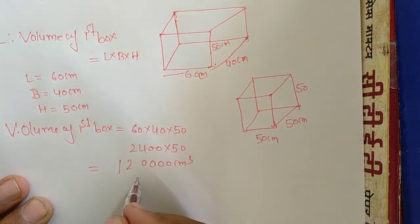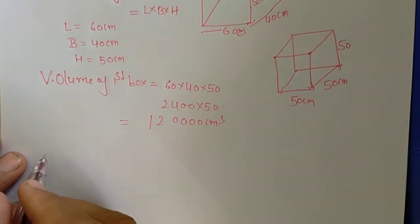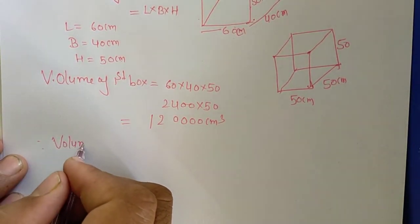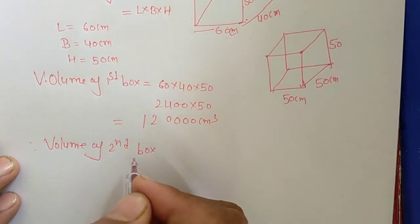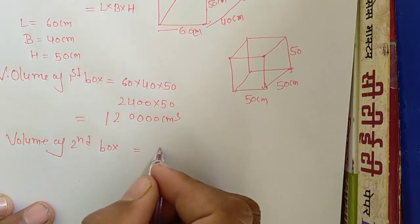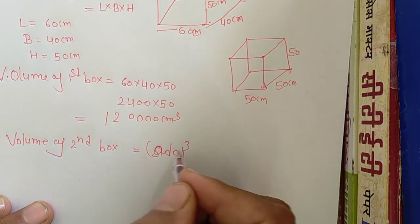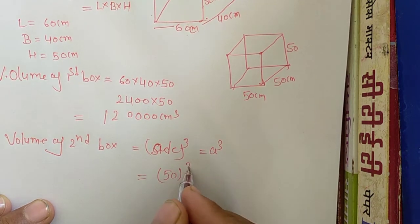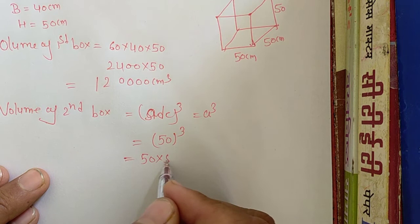So first box quantity. There is volume of second box. Volume of second box equal to side cube. So you can see a cube, you can see it as a cube, so this means that 50 will be 3 times multiplied: 50 into 50 into 50.